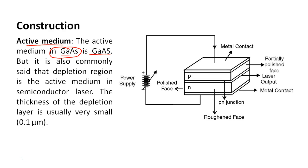This is the construction diagram. You can see here that this is a P-type semiconductor, this is an N-type semiconductor, and this is a power supply. These wires are connected through metal contacts. This is the partially polished face, from which we will get the laser output. The partially polished face acts as the optical resonator system.